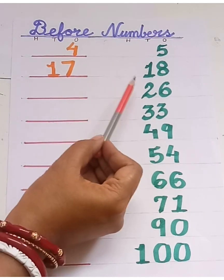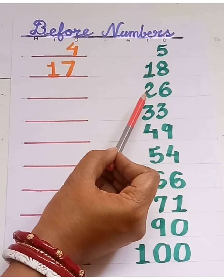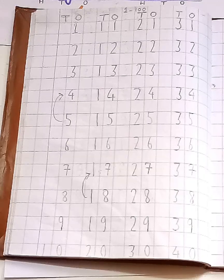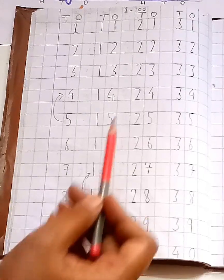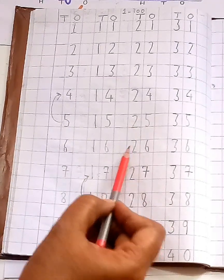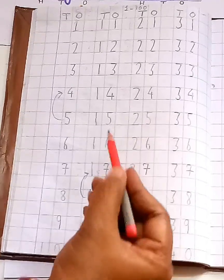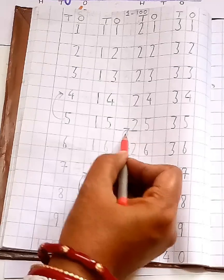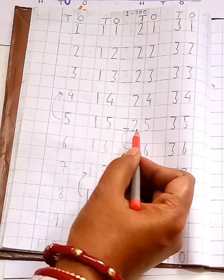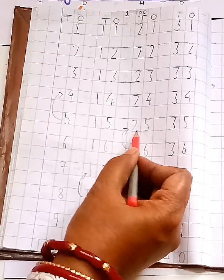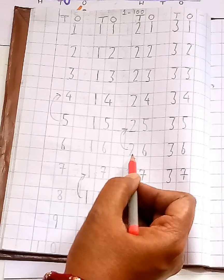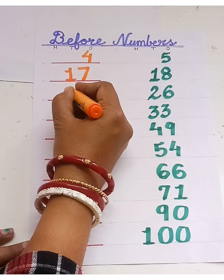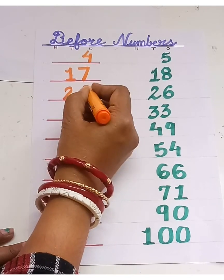Which number comes before twenty-six? Let's count backward from twenty-six. Twenty-six and then twenty-five. Twenty-five comes before twenty-six. Let's write twenty-five.